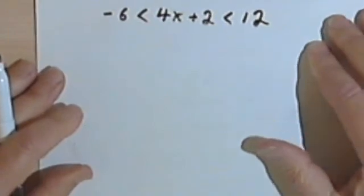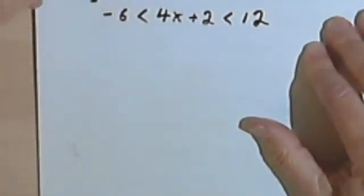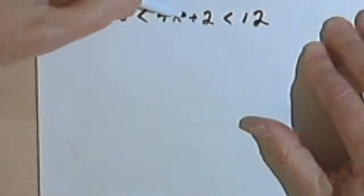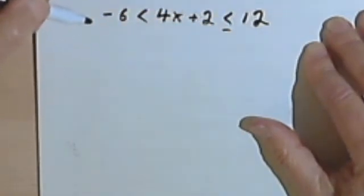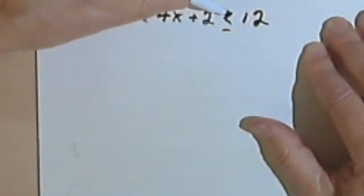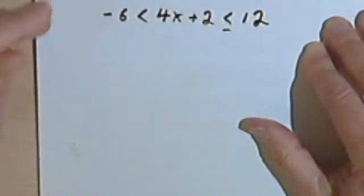Now, one more kind of inequality we should talk about. This is kind of a neat one. Here I've got two inequality signs. I've got negative 6 is less than 4x plus 2, which is less than or equal to 12. We haven't done any or equal to's.